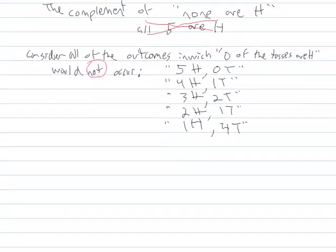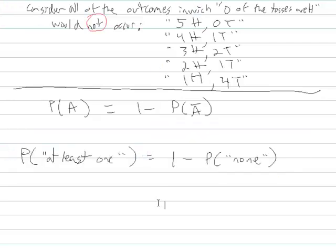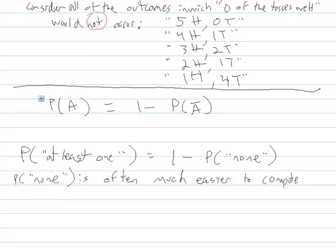Now that we've verified these complements, recall that the probability of an event is equal to one minus the probability of its complement. In this case specifically, the probability of at least one is equal to one minus the probability of none. This is very helpful in some situations, because the probability of none is often much easier to compute.